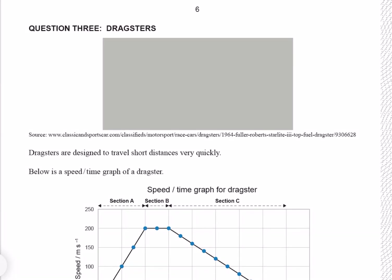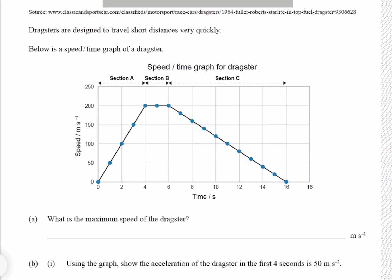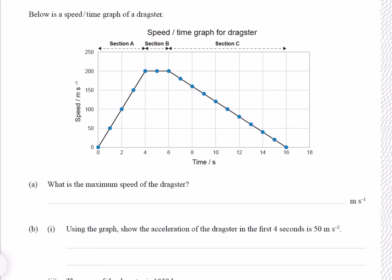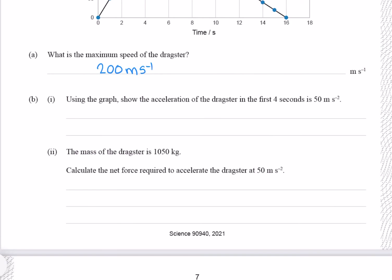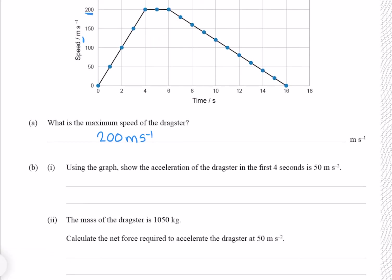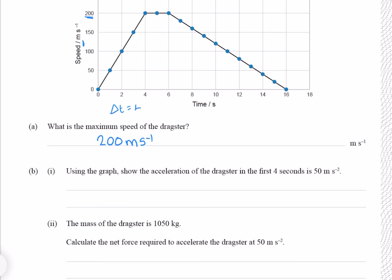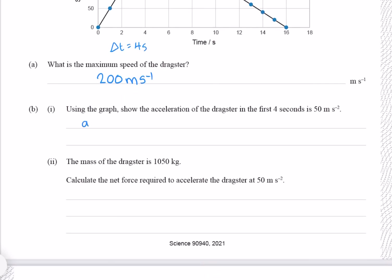Question 3: Dragsters are designed to travel short distances very quickly. Below is a speed-time graph of a dragster. Question A: What is the maximum speed of the dragster? Since our speed is on our y-axis here, we can see that the maximum value is 200 meters per second. Using the graph, show the acceleration of the dragster in the first 4 seconds is 50 meters per second per second. To do that we need our change in time, which is 4 seconds. As we looked at in the previous question, our change in velocity is 200 meters per second. The equation we use is that acceleration equals change in velocity divided by time, which is 200 divided by 4, and therefore 50 meters per second per second.